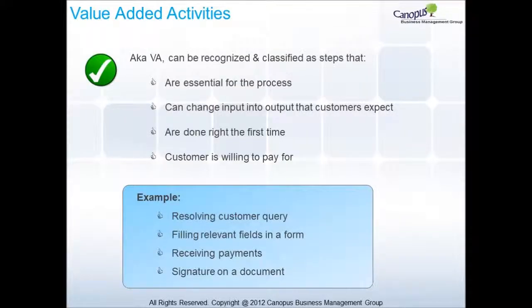Value added activities, or VA, can be recognized and classified as steps that are essential for the process, can change input into output that customers expect, are done right the first time, and the customer is willing to pay for them. For example: resolving a customer query, filling relevant fields in a form, receiving payments, and signature on a document.